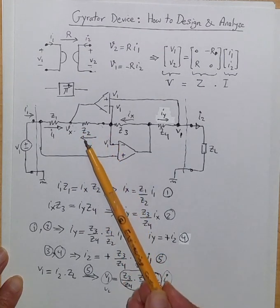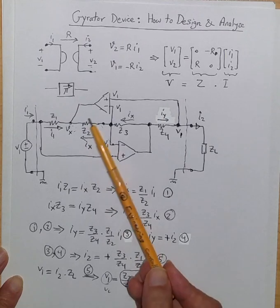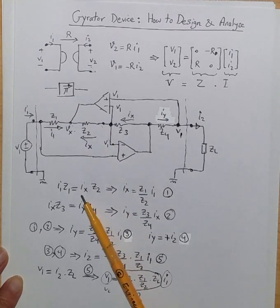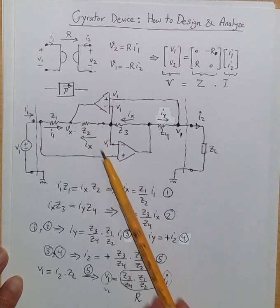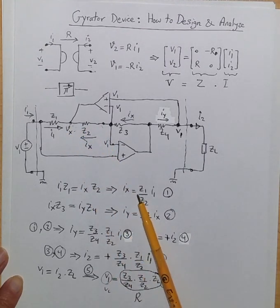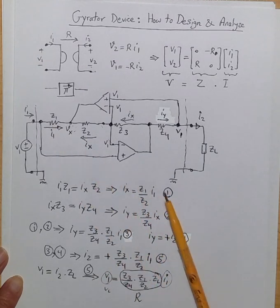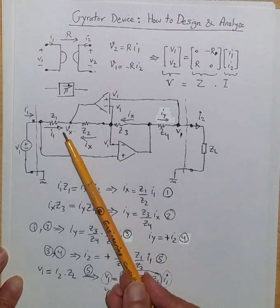That is the current going through Z2, which Z2 times Ix represents the voltage drop across this guy. So we can say Ix, the current going through Z2, is equal to Z1 divided by Z2 times I1. That is relationship one.